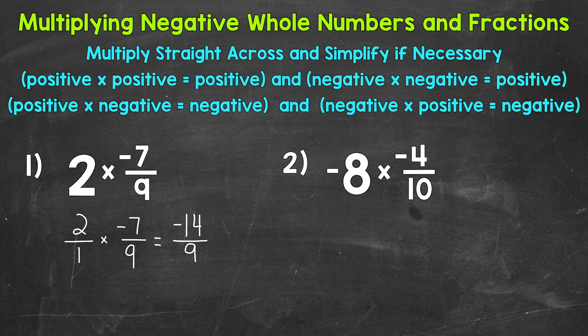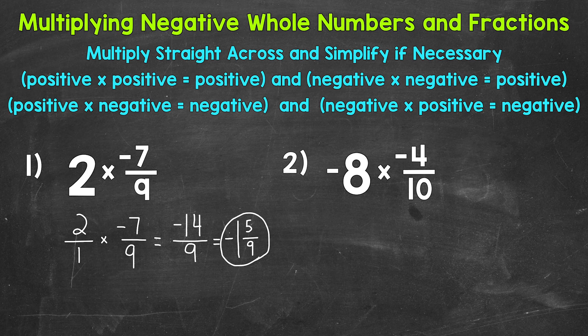Let's convert it to a mixed number by dividing our numerator by the denominator: negative 14 divided by nine. Thinking of 14 as a positive — how many whole groups of nine go into 14? One. We have a remainder of five. We keep our denominator of nine. We had a negative divided by a positive, so different signs gives us a negative result. Five ninths is already in simplest form, so we are done: negative one and five ninths.